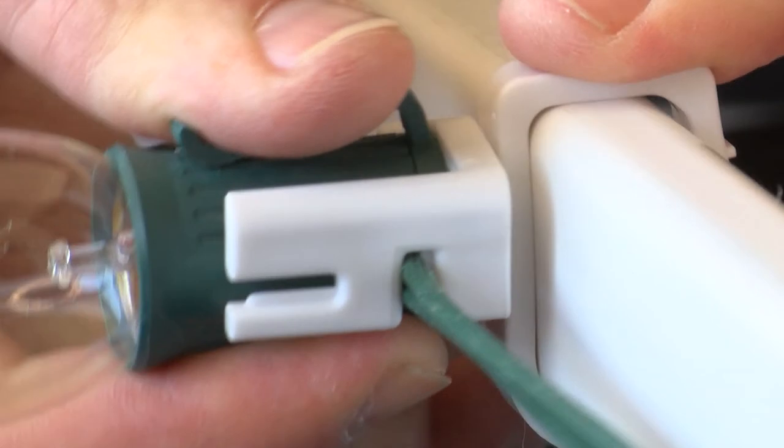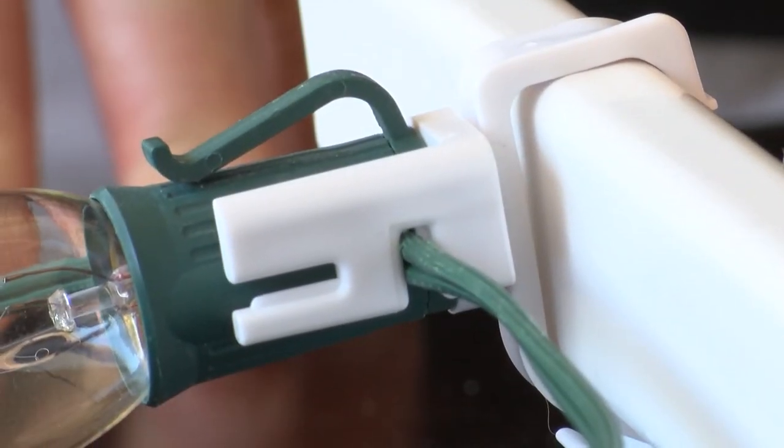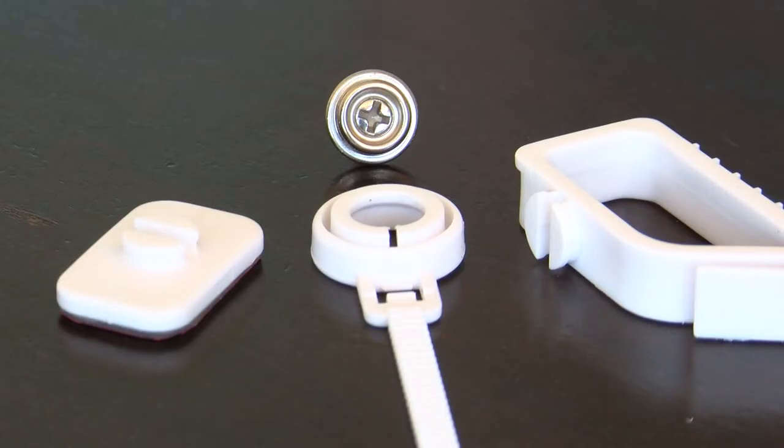If the length of your gutter is shorter than your string light, you can seamlessly change from using a gutter snap to a sticky snap or screw snap and continue along your fascia, door frames, or window frames.